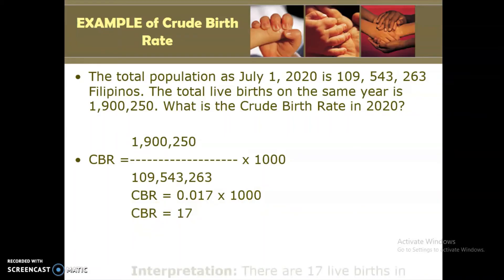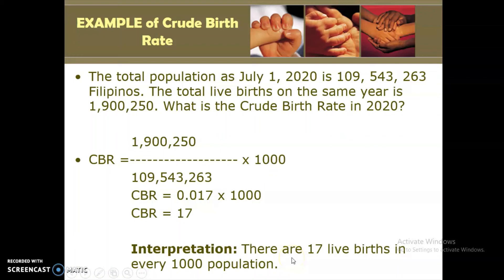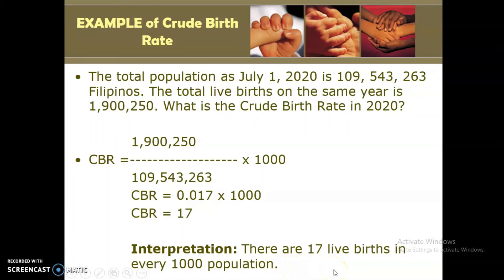So how do we interpret this data? Therefore, if the CBR is 17, the interpretation is that there are 17 live births in every 1,000 population. You have to consider time and place — so the correct interpretation is: there are 17 live births in every 1,000 population in the Philippines in 2020. If you have further questions, kindly type them in the comment section.